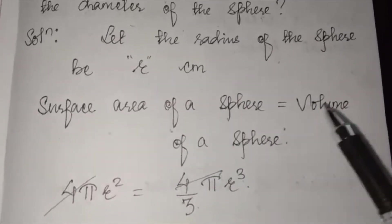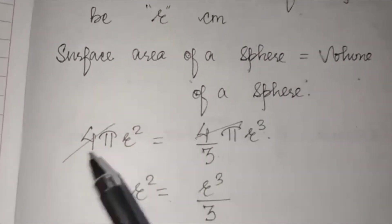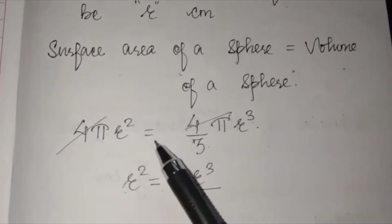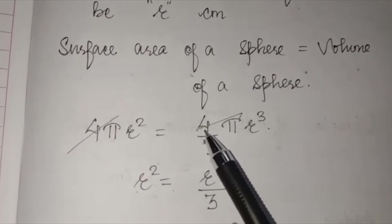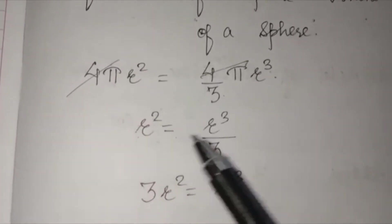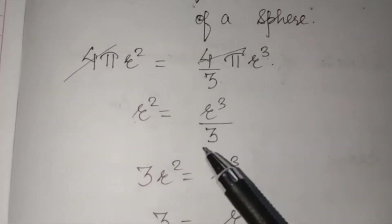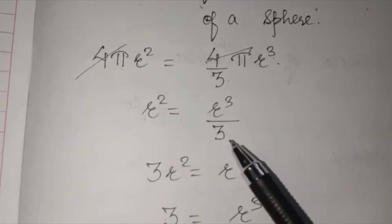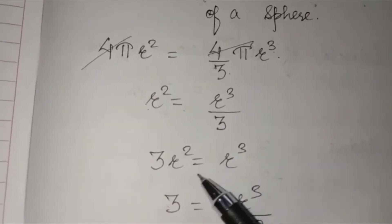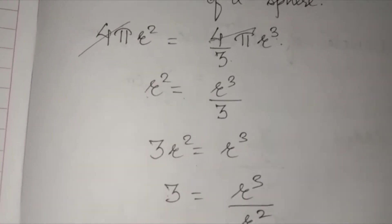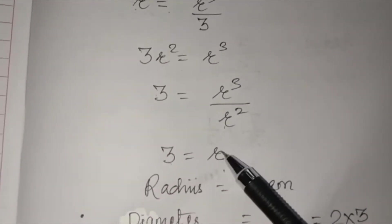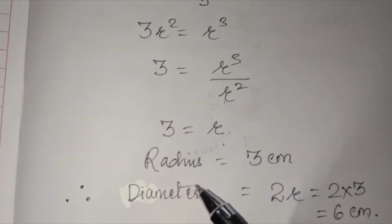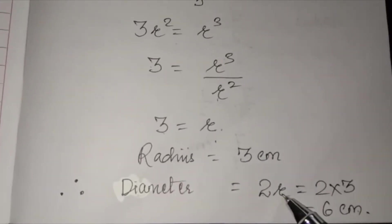Surface area of sphere equals volume of sphere: 4πr² = 4/3 πr³. The 4π cancels, so r² = r³/3. By cross multiplication, 3r² = r³, so 3 = r³/r² giving radius r = 3. Therefore diameter = 2r = 2 × 3 = 6 centimeters.